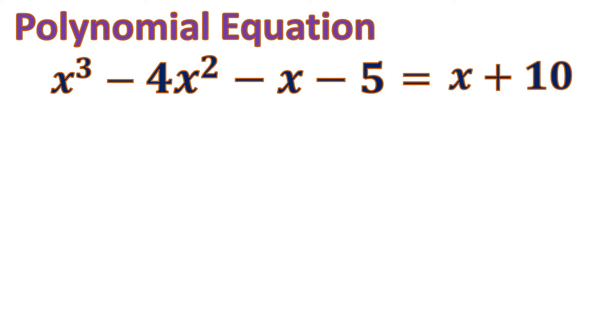And usually we transpose or we transfer all the terms from the right going to the left so that all the variables will be in one side. It's at the left side of equal sign. And it's easier for us to find the missing variable.